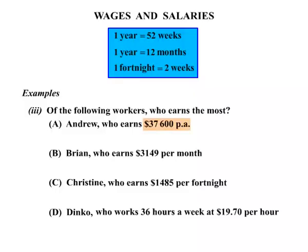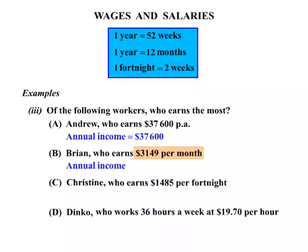We'll work out the annual income for all four so we can compare properly. Andrew's annual income is $37,600. For Brian, he's getting $3,149 per month, and there are 12 months in the year, so we multiply that by 12, which works out to be $37,788.